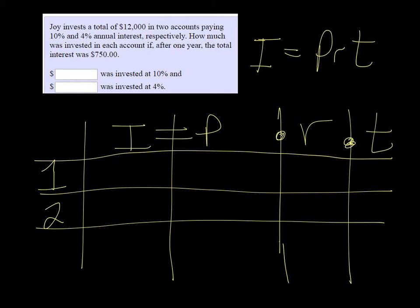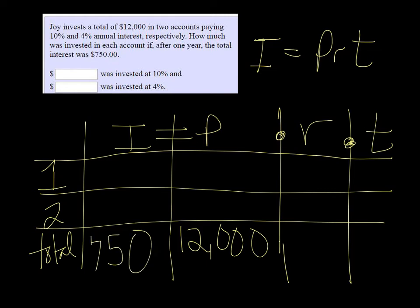Alright, the principal in both accounts was $12,000, so I am going to put $12,000 here in what I'm going to call the total column, or row. And the total interest was $750.